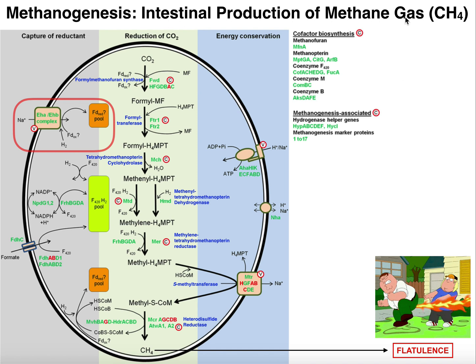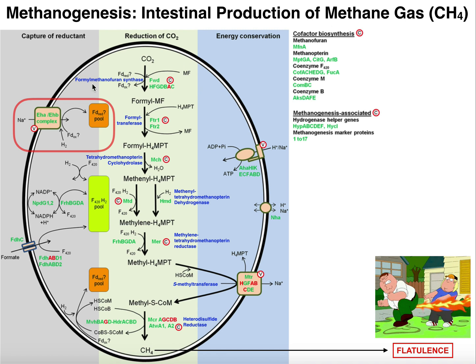As we mentioned in the previous video on hydrogenesis, or intestinal production of hydrogen gas, there are bacteria in the small intestine that are able to produce hydrogen gas. Those same bacteria that produce hydrogen gas are going to use this hydrogen gas and the carbon dioxide — both of which are products of formate breakdown — to generate precursors and ingredients to make methane.